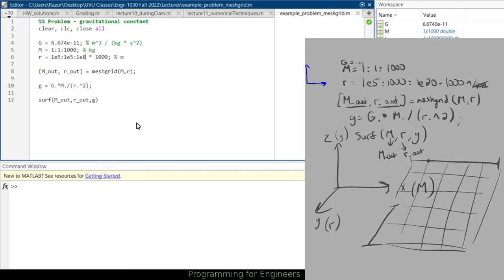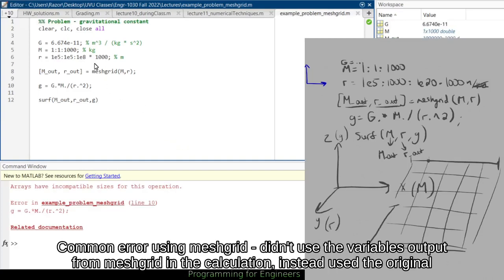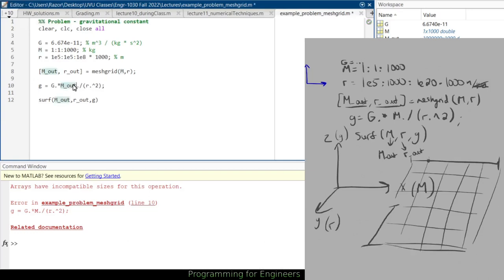So looks like we're going to take a second here. Okay. We're going to have incompatible size. Of course, I got to do m out, r out. And run this again.